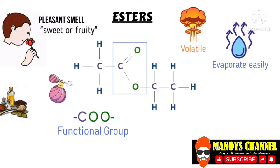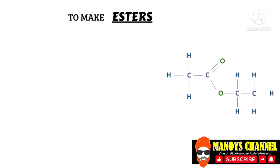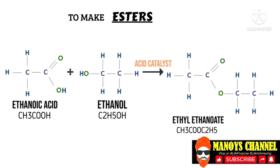In order to make an ester, we have to use a carboxylic acid and an alcohol. So to make the ester, which is ethyl ethanoate, we need to use ethanoic acid and ethanol. We also need an acid catalyst to speed up the reaction, and we normally use concentrated sulfuric acid.